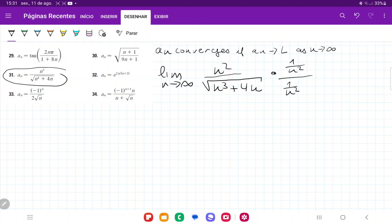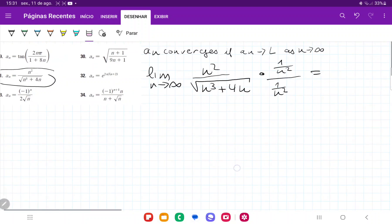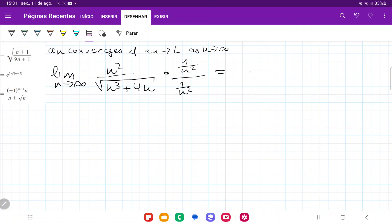So when we do this, we're going to get that on the top that is going to be equal to just 1. It's going to be equal to, let me scroll here, the limit as n approaches infinity. n squared divided by n squared is just 1 over square root of n cubed plus 4n and all of this over n squared.